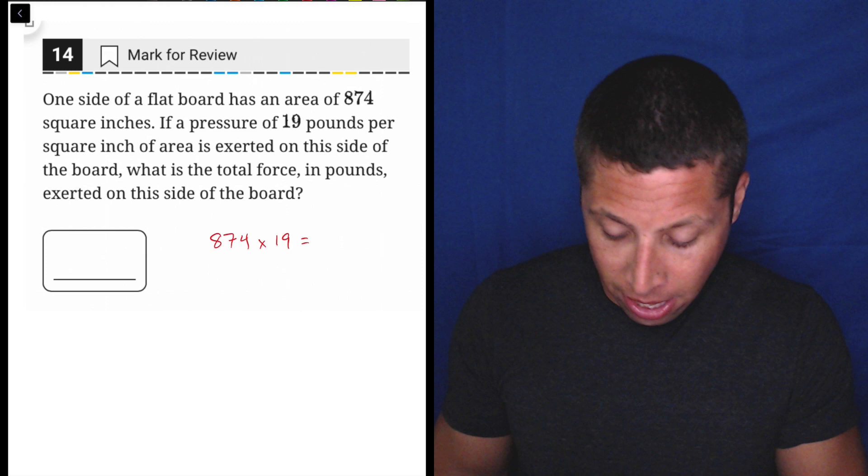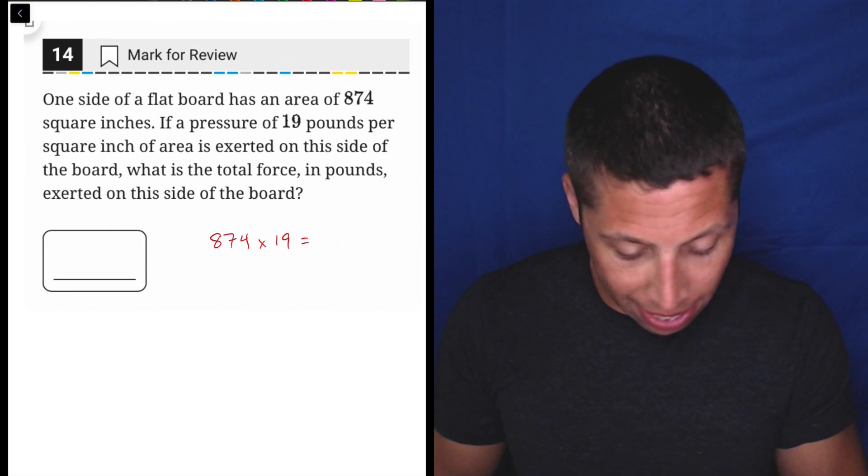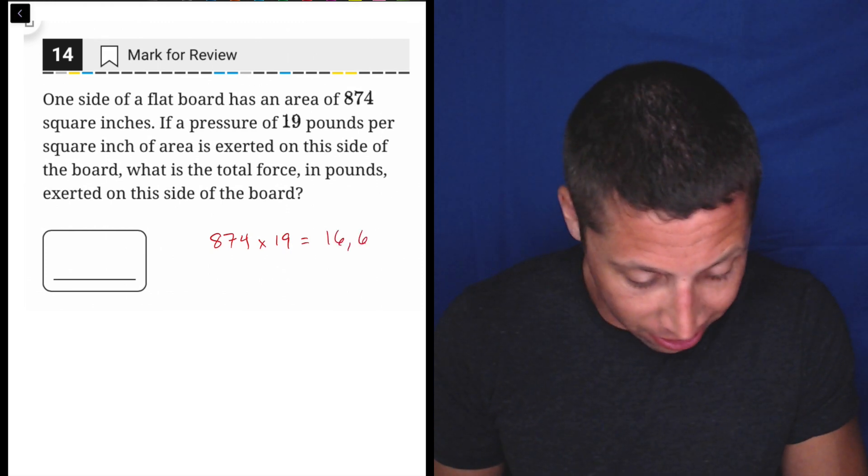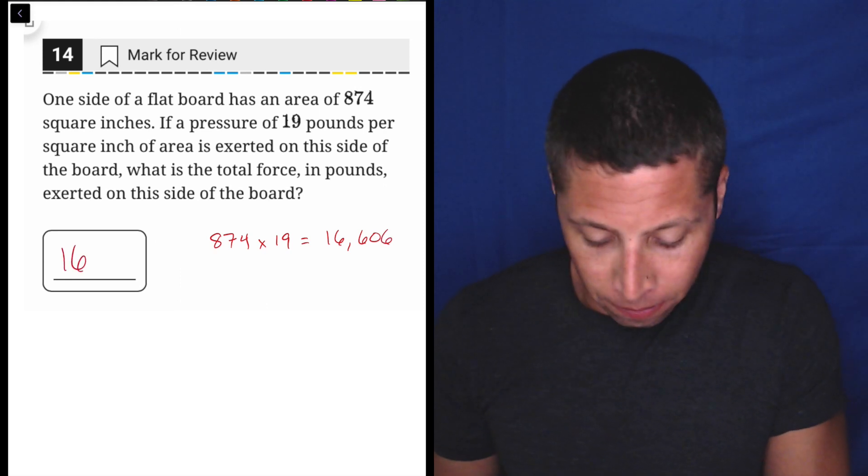Grab the calculator, 874 times 19 is a weird number, 16606, but that's the answer.